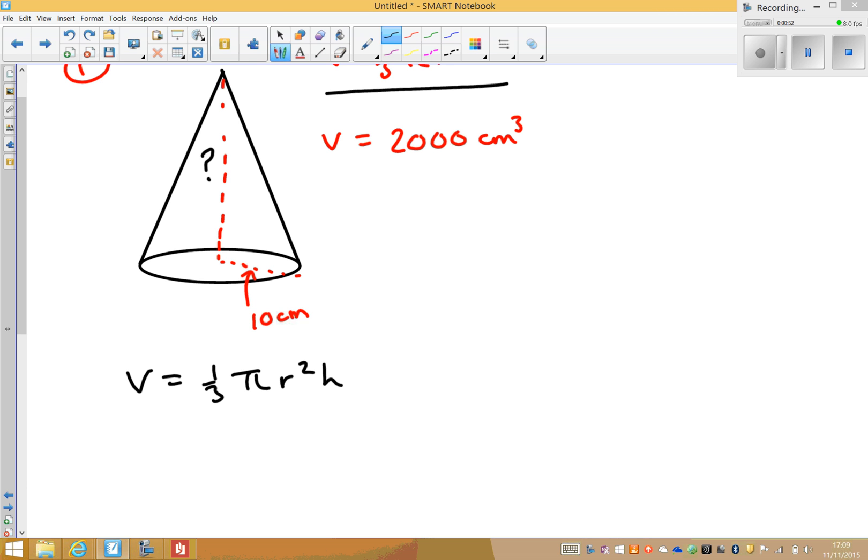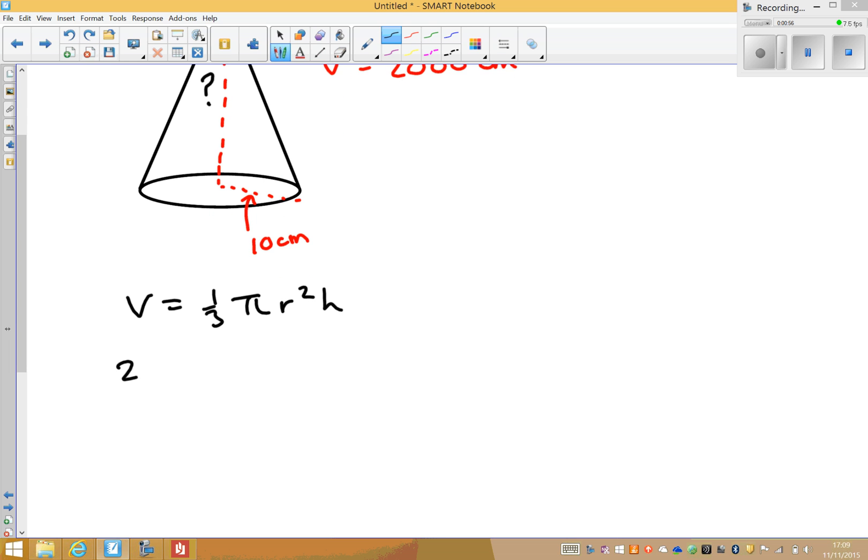And I'm going to substitute in all the information I know. So I know in this case that the volume is 2,000 centimeters cubed. The third stays as it is, so is pi. We know the radius. We know that that's going to be 10 squared. And finally, we don't know the height, so we leave that as h.